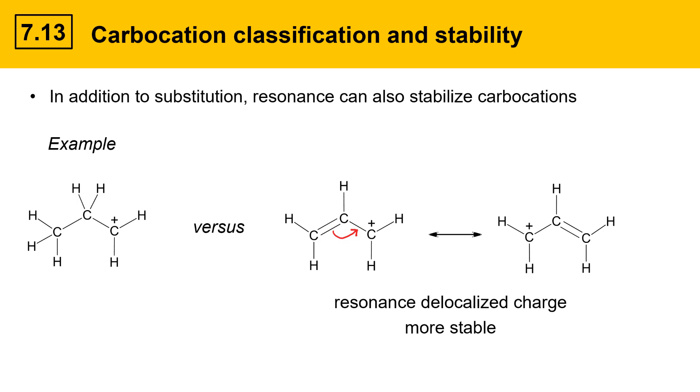This resonance delocalization of charge is a stabilizing influence and that makes the carbocation on the right more stable, while the carbocation on the left has a localized positive charge. The charge here on that carbon is stuck in one spot and that's a less stable situation. So look for resonance when you're trying to consider the stability of a carbocation.